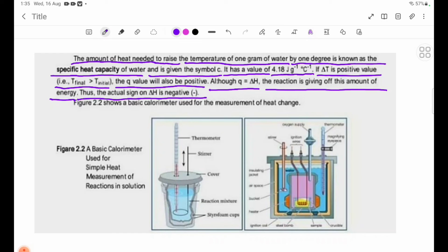To summarize: If Q is positive, delta H is negative. If Q is negative, delta H is positive. When T final is greater than T initial, Q is positive. When T final is less than T initial, Q is negative.